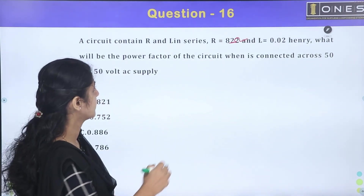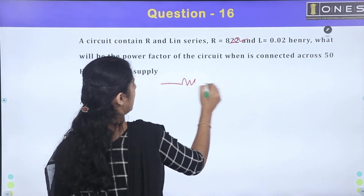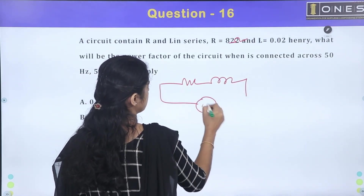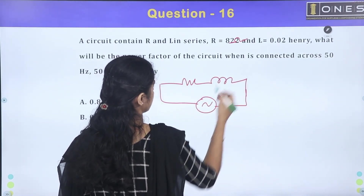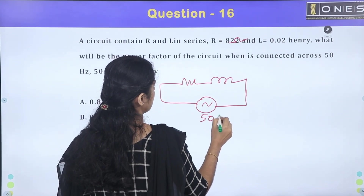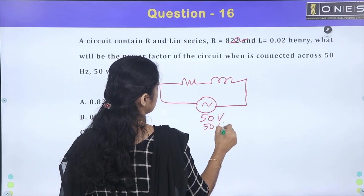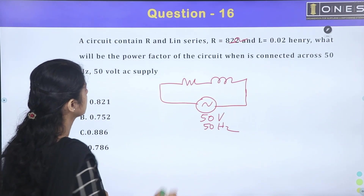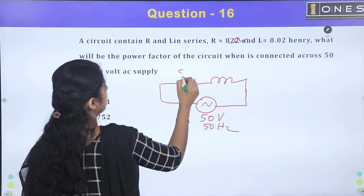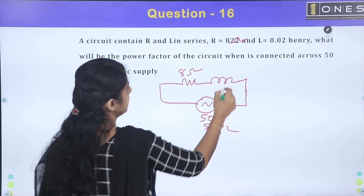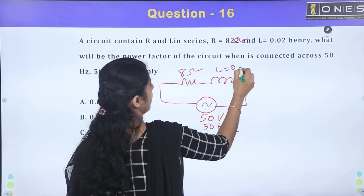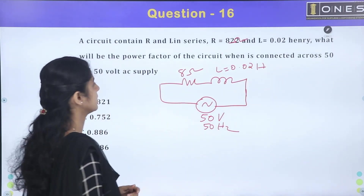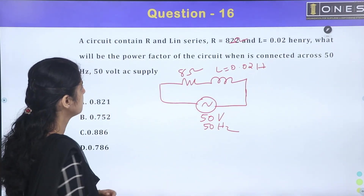One RL circuit with an AC source of 50 volt, 50 hertz. The resistance value is 8 ohm and inductance value is 0.02 henry. What will be the power factor?